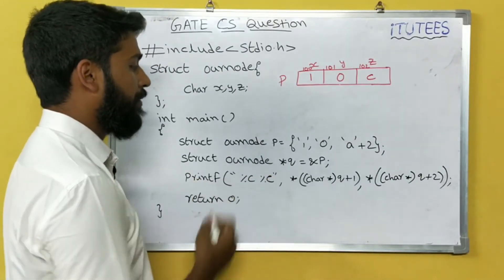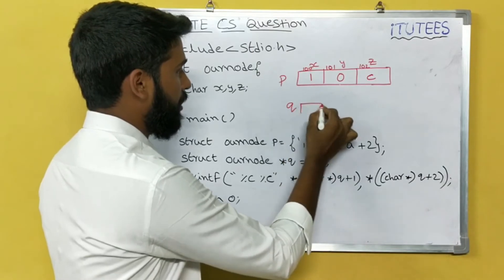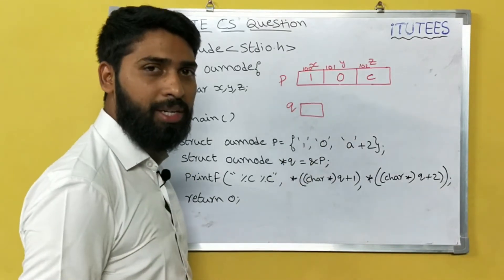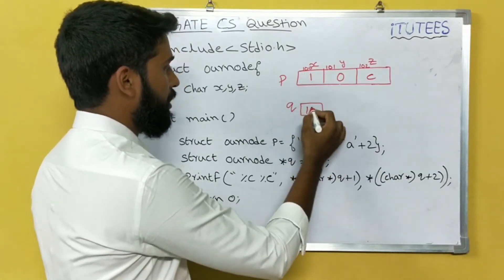Next, struct ournode *q. That means q is a pointer. It stores the address of another variable. We can store the address of P. That means address of P is 100.